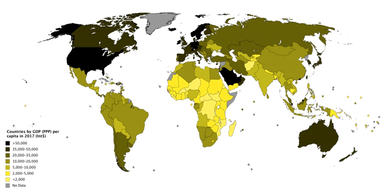After classifying economic activities, the output of each sector is calculated either by multiplying the output of each sector by their respective market price and adding them together, or by collecting data on gross sales and inventories from the records of companies and adding them together. The gross value of all sectors is then added to get the gross value added (GVA) at factor cost. Adding indirect tax minus subsidies in GVA at factor cost gives the GVA at producer prices.